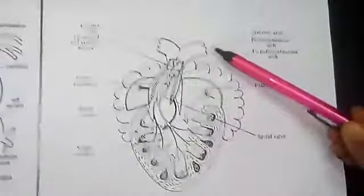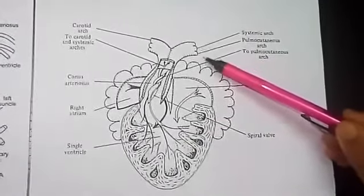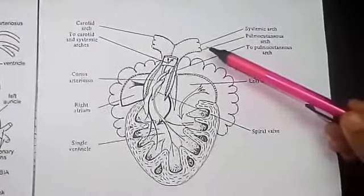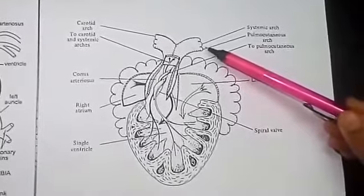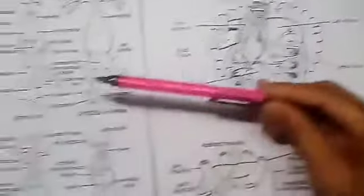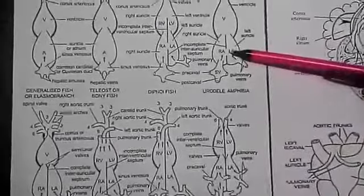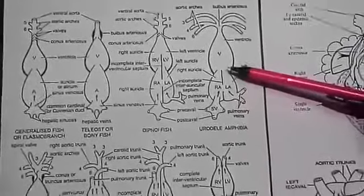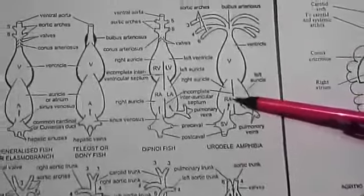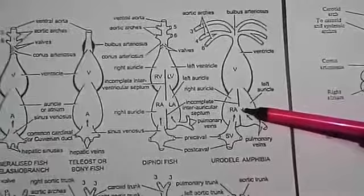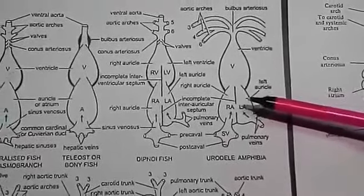The conus arteriosus divides into two systemic and pulmonary vessels by a spiral valve. In lungless salamanders, the inter-atrial septum is incomplete and pulmonary veins are absent.